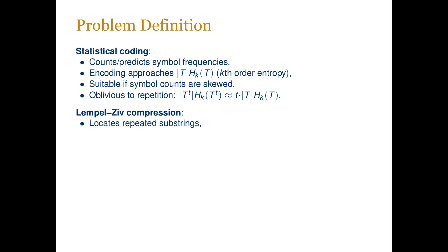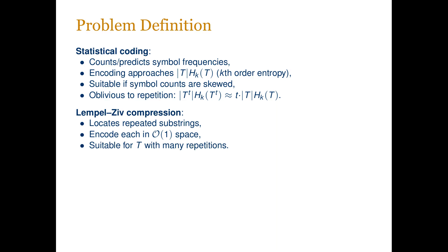The main idea in Lempel-Ziv compression is to explicitly locate repeating substrings in the input. Each repeating substring is encoded in constant space as a pointer to the previous occurrence. LZ compression is therefore particularly suitable for inputs with many repeated substrings. These two compression methods are thus fairly well understood from the theoretical point of view — it is clear what kind of redundancy they remove.